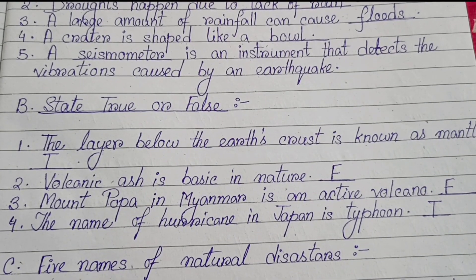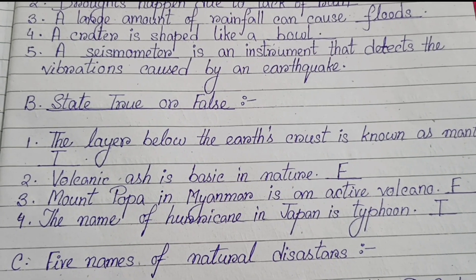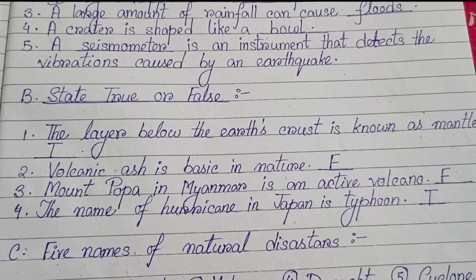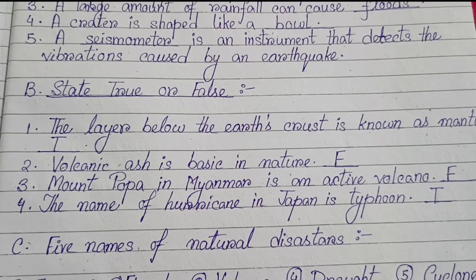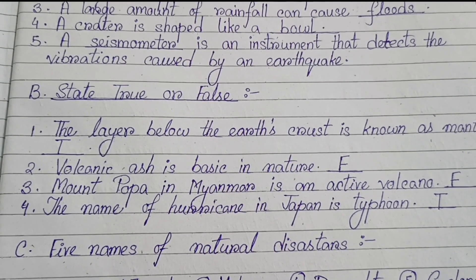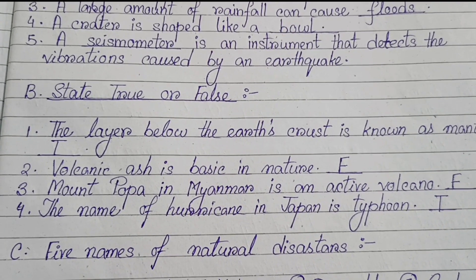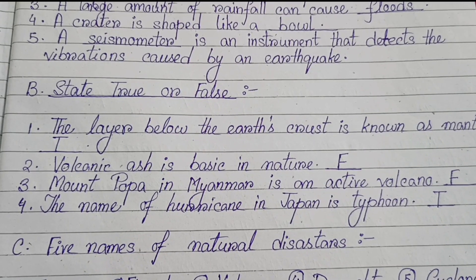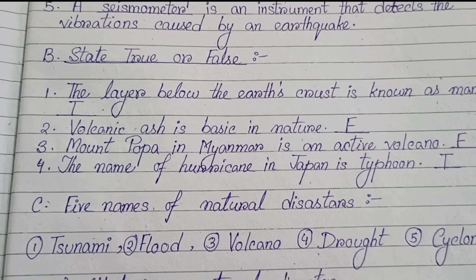Number B: State true or false. Number one: The layer below the earth's crust is known as mantle — True. Number two: Volcanic ash is basic in nature — False. Number three: Mount Papa in Myanmar is an active volcano — False. Number four: The name of hurricane in Japan is typhoon — True.